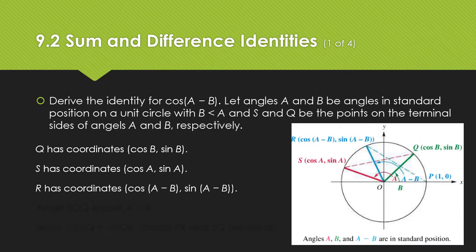We're also going to define an angle that is A minus B. That angle is the one that ends on the blue line there. Its coordinates are going to be cosine A minus B and sine A minus B, because that angle is the measure of A minus the measure of B. Angle S-O-Q actually equals A minus B. If you think about it for a minute, you can see how those two things are equal.